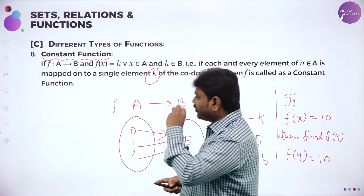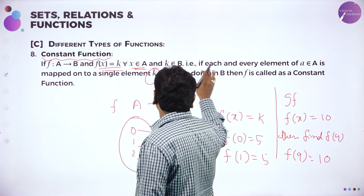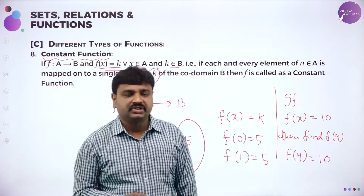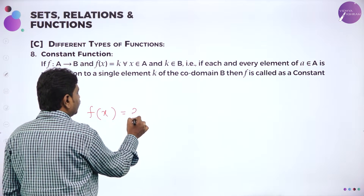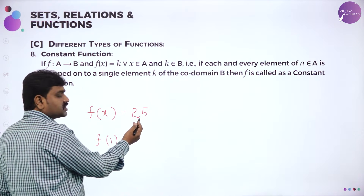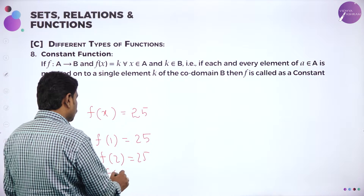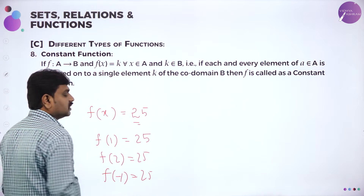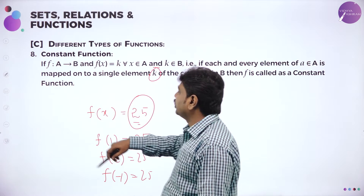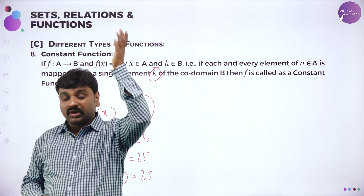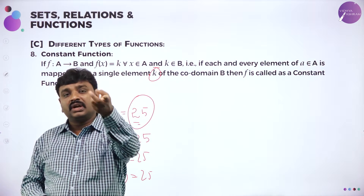Constant function means every element of domain will have the same image, called K. Sometimes they'll say: if f of x equals 10, find f of 9. In the place of x put 9 — we don't have x here, so f of 9 is also 10. F of 8 is also 10, f of minus 1 is also 10. This is constant function — always its image is 10. So f maps A to B: f of x equals K for all x belonging to A, K belonging to B. Each and every element of A will have the same image K.